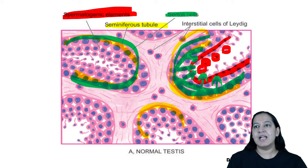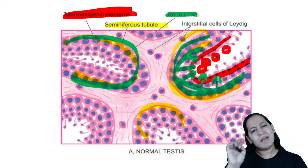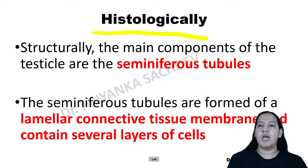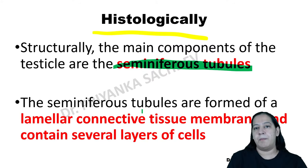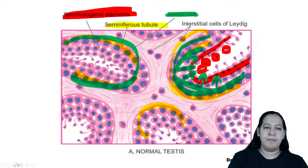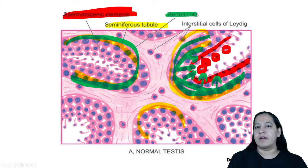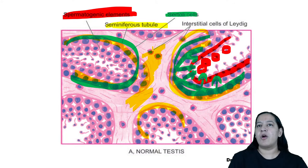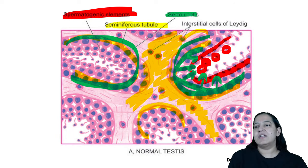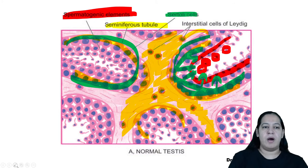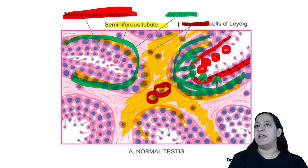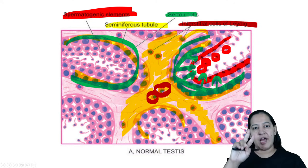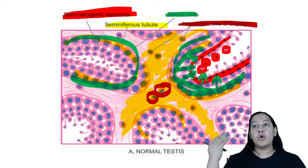The background between the tubules is known as the stroma. In the stroma, there is a third type of cell — the interstitial cells of Leydig. These are present in the interstitium. If you zoom in on an interstitial cell of Leydig, the cytoplasm contains multiple pink-colored granules known as Reinke crystals. These also produce testosterone.